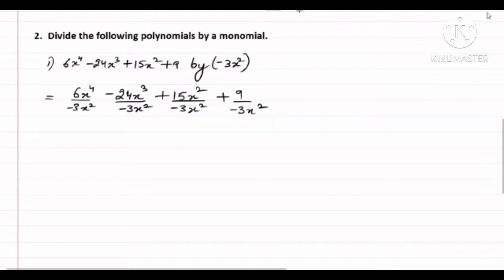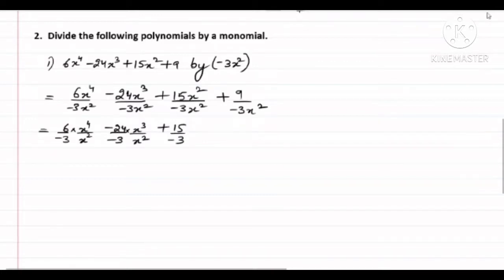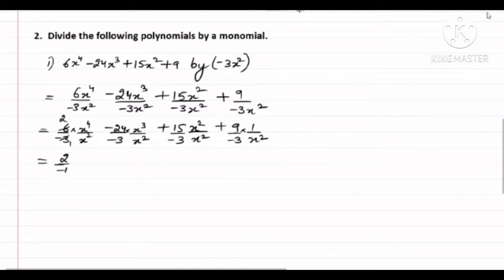Now just like I did the first question, solve all four terms separately. For the first term: 6 upon minus 3, and with it x⁴ upon x². Similarly minus 24 upon minus 3, into x³ upon x². Then plus 15 upon minus 3, then x² upon x². And plus 9 upon minus 3, into 1 upon x². Now cancelling: minus 3 and 6 cancel — 3 ones are 3, 2 twos are 4 — giving 2 upon minus 1, and x⁴ upon x² gives power 4 minus 2. Next, minus 24 upon minus 3 — minus minus becomes plus, and 3 eights are 24, so 8 — and x³ upon x² gives power 3 minus 2.